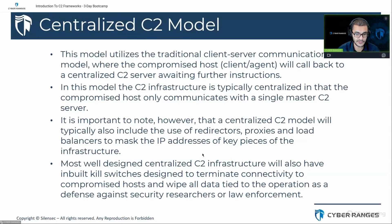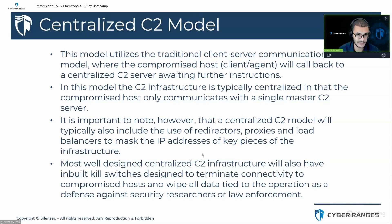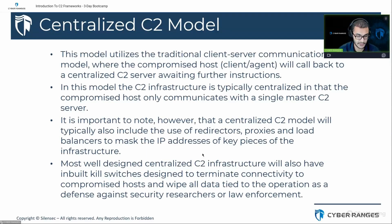With the centralized model you will typically have only one primary C2 server, though that's not always the case because there can be a complex infrastructure even within a centralized C2 deployment. In certain cases you'll see a primary or master and slave server configuration, where one serves as a fallback in the event that the other goes down or is compromised. There's also additional infrastructure that can be added, typically including elements like redirectors, proxies, and load balancers.